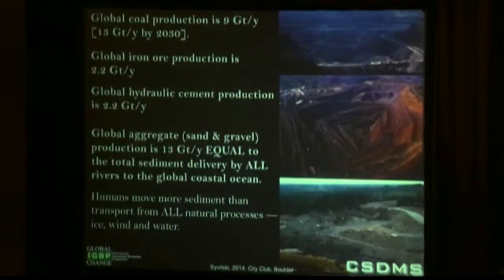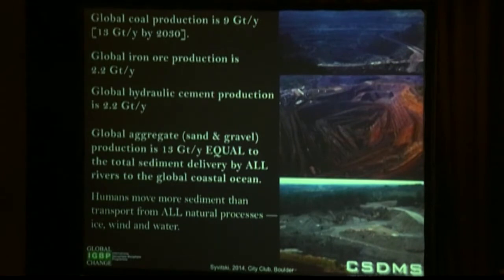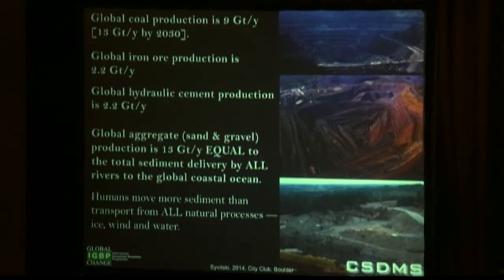But our mining of earth's resources is truly staggering. Coal production: we're mining at nine gigatons per year right now, and industry websites suggest they'll be mining 13 gigatons per year by 2030. Global iron production is 2.2 gigatons, global hydraulic cement is 2.2 gigatons, and global sand and gravel production is 13 gigatons per year.